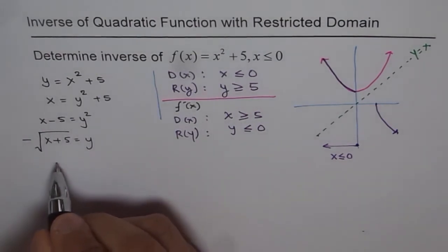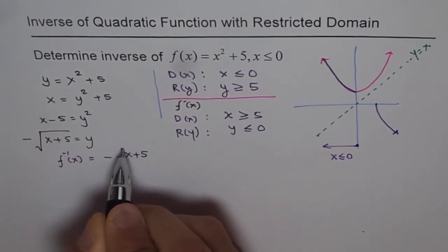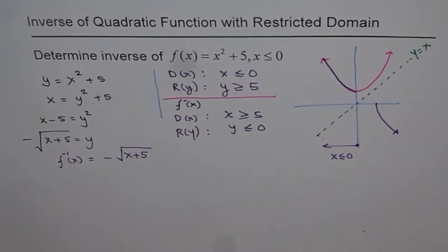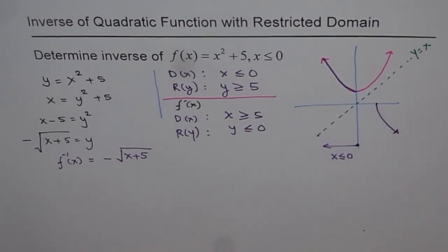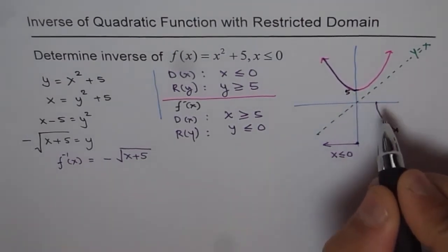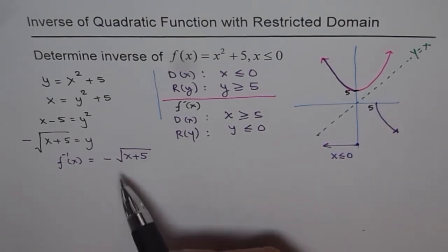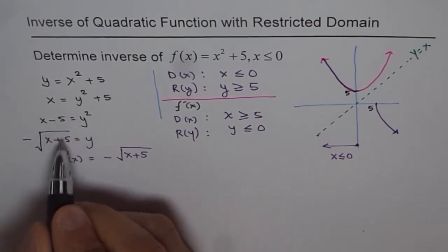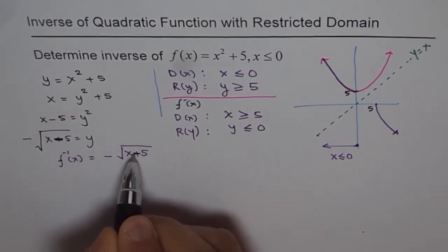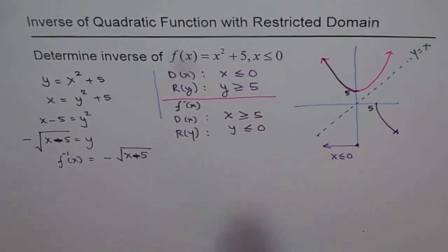Therefore, f⁻¹(x) = -√(x - 5). That is the inverse of the given function under this restriction. Looking at the graph, the x-intercept of the inverse is at 5, consistent with the formula — note that this should be x - 5, not x + 5; that was an error corrected here.